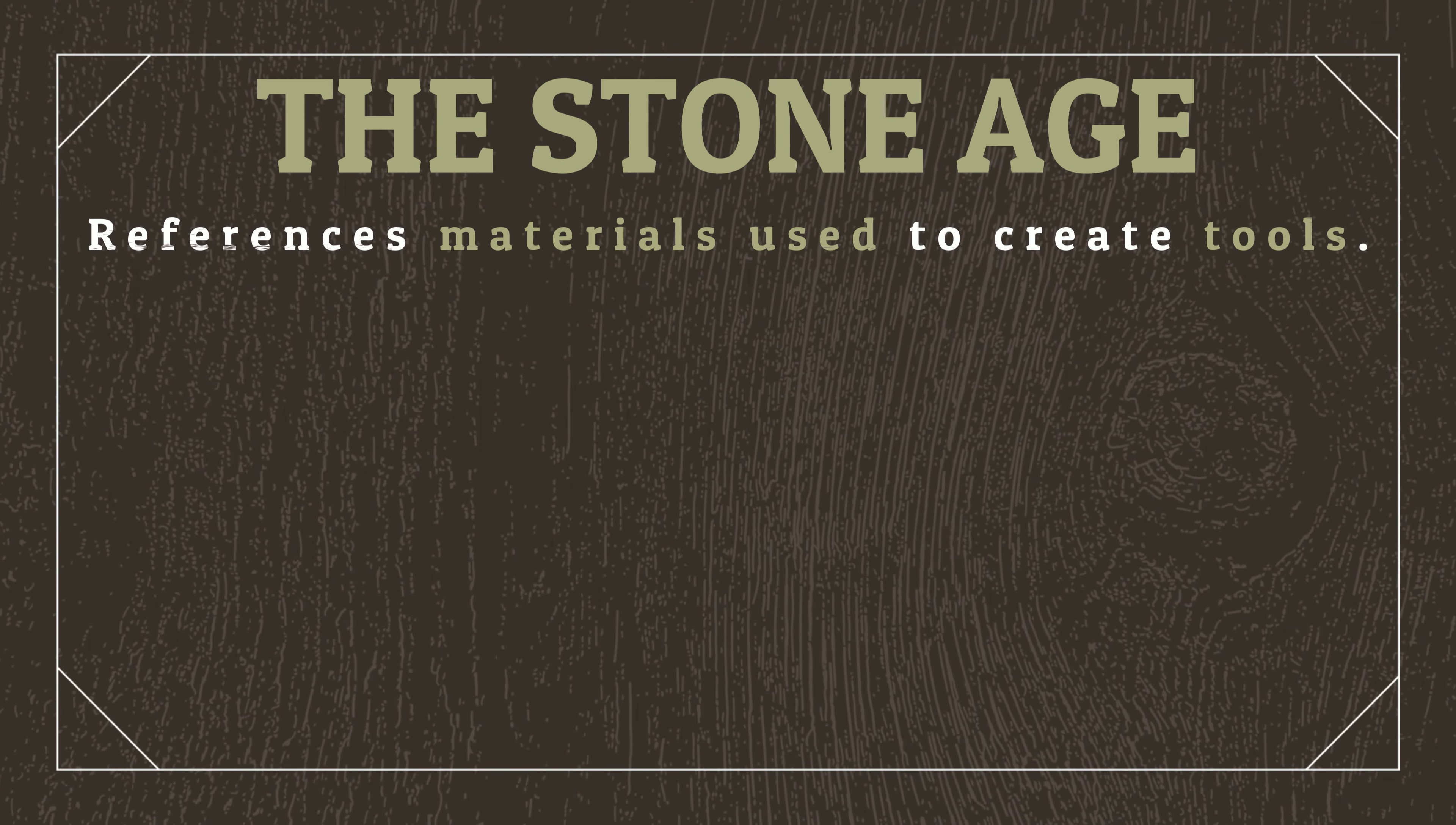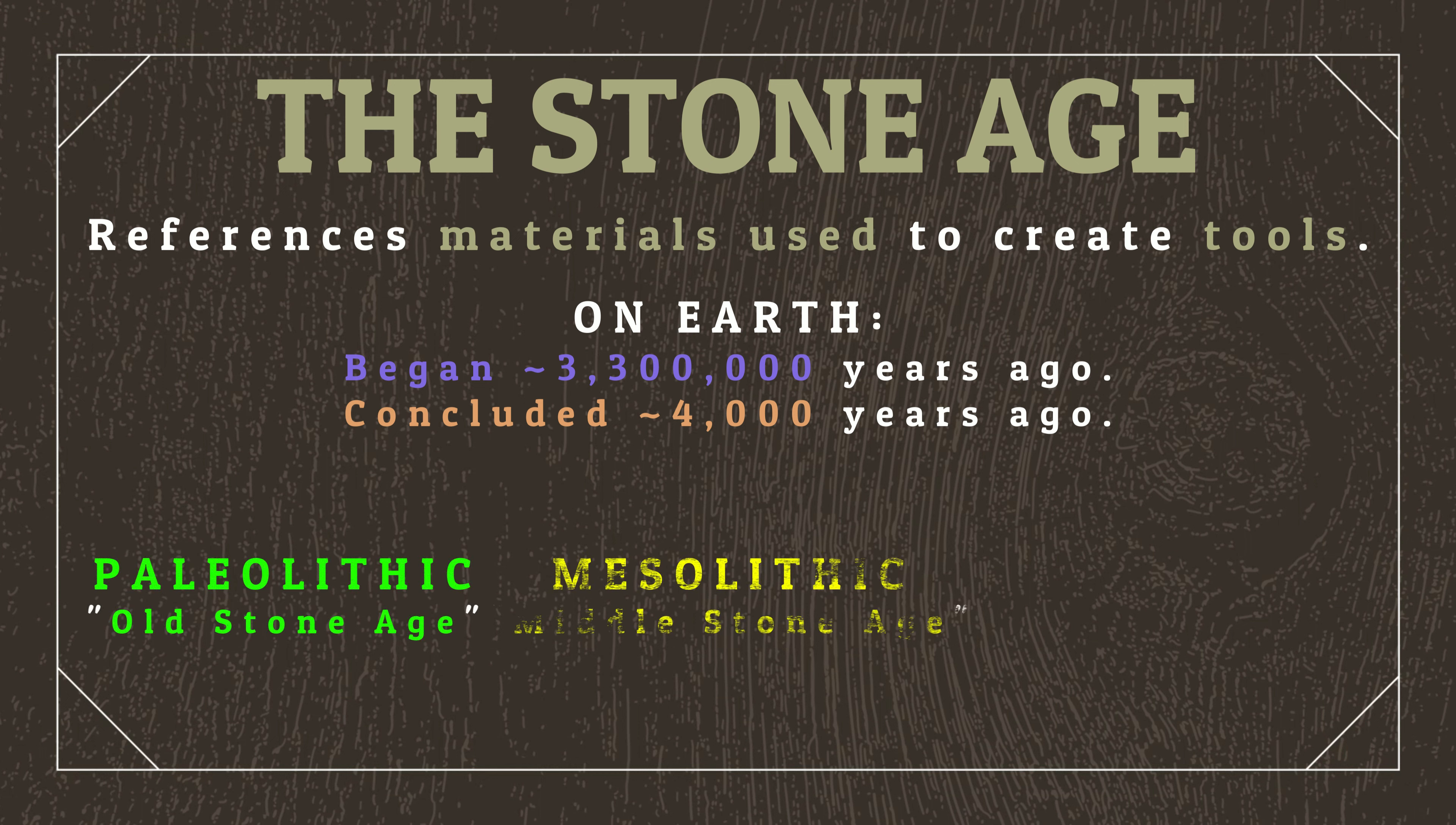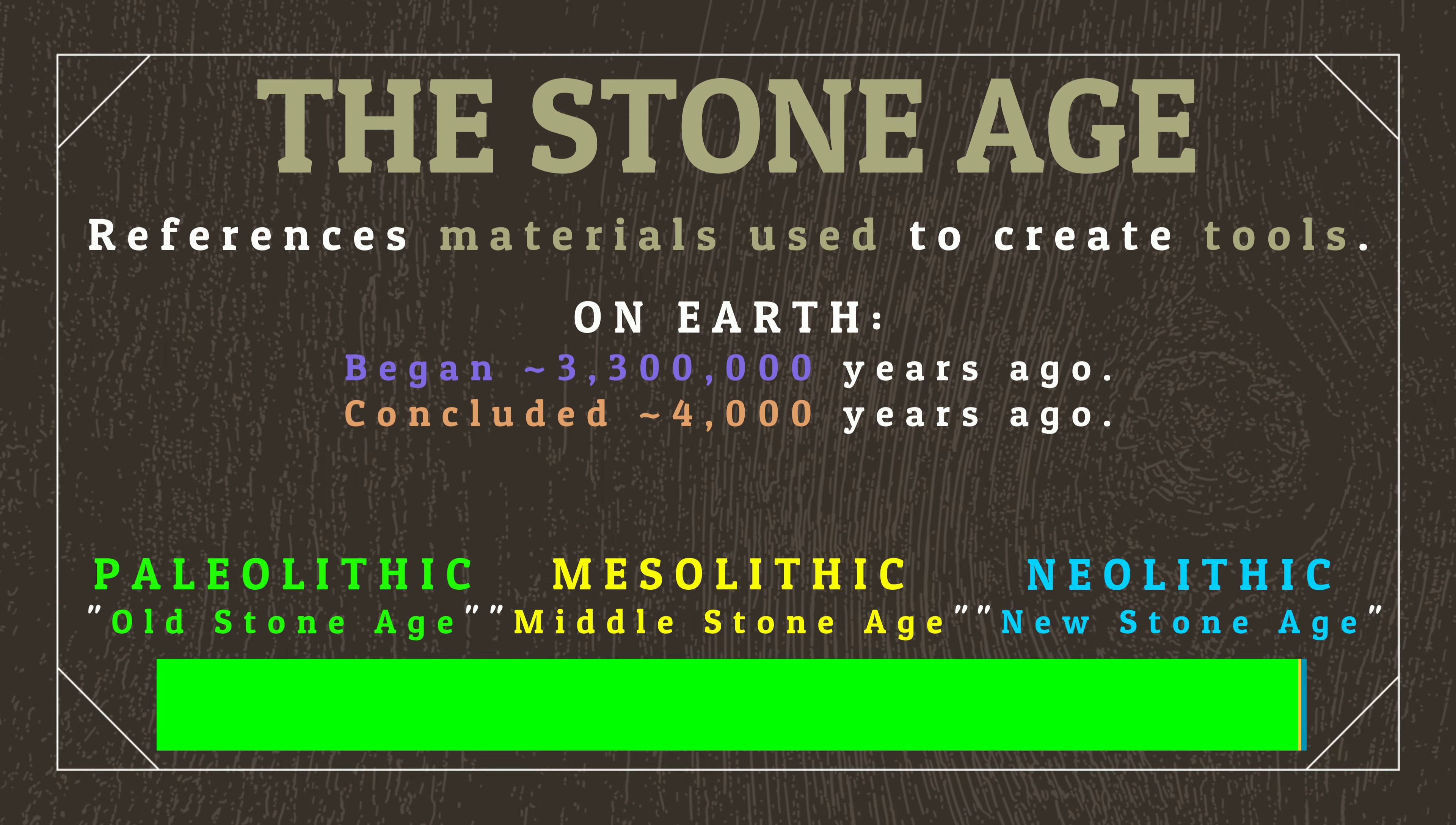We often don't call our human prehistory, prehistory however, instead referring to it as the Stone Age, in reference to the materials used to create tools at the time. On Earth, the Stone Age began 3.3 million years ago, and concluded 4,000 years ago, and is divided into the Paleolithic, Mesolithic, and Neolithic periods. This division, however, is somewhat misrepresentative, as the Paleolithic makes up over 99% of the entire Stone Age.